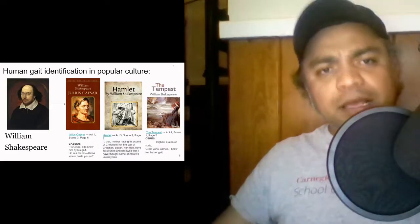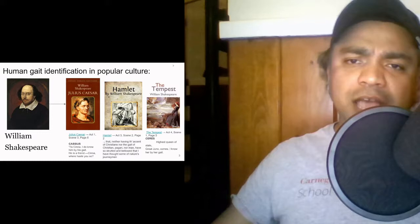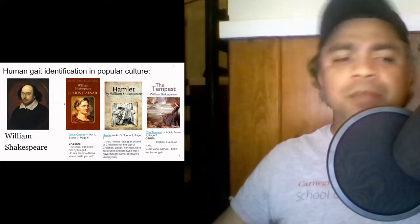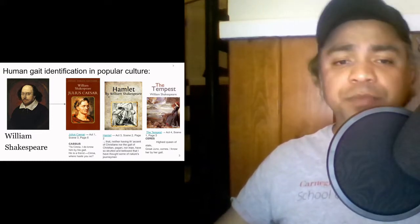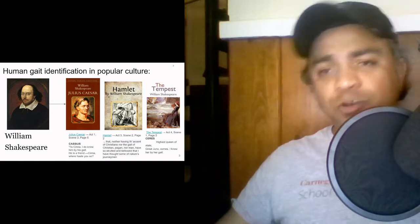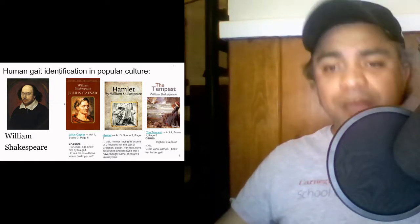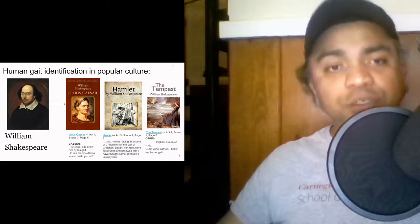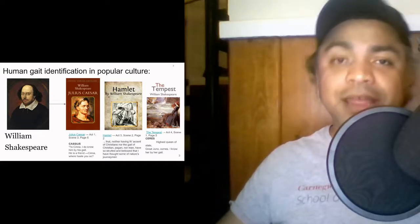Introduction. Human gait identification has been in popular books for a long time. If you've read the works of William Shakespeare, right from Julius Caesar to The Tempest, you have his characters recognizing each other by the sound of their footsteps or by the idiosyncrasies in their gait.